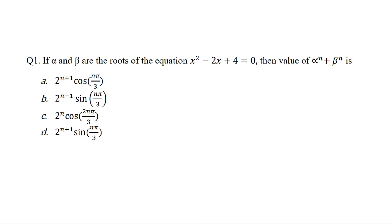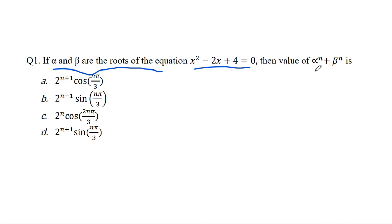Hello learners, today we are going to solve some problems based on algebra. Your first problem is: if alpha and beta are the roots of the equation x squared minus 2x plus 4 equals 0, then you have to evaluate the value of alpha raised to the power n plus beta raised to the power n.